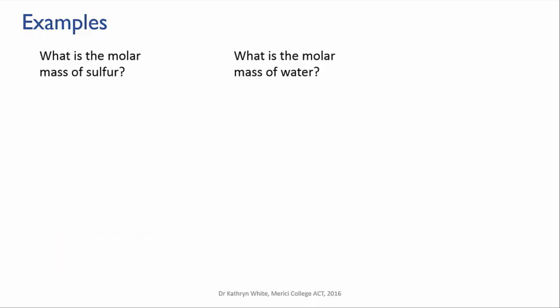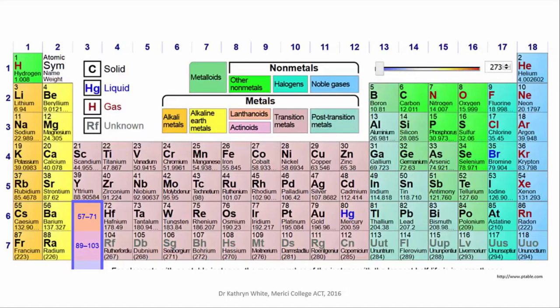Well, sulfur is an element, so this means we can look it up on the periodic table. So we go to the periodic table and we look for the mass number under the element symbol of sulfur. So here's sulfur and there's the mass number 32.06.